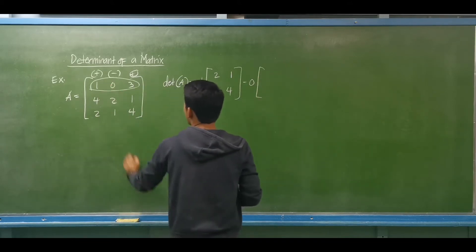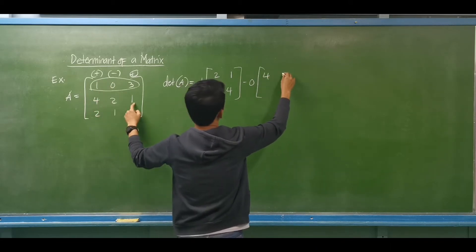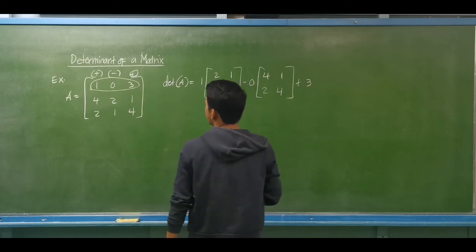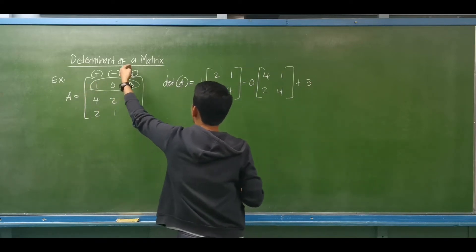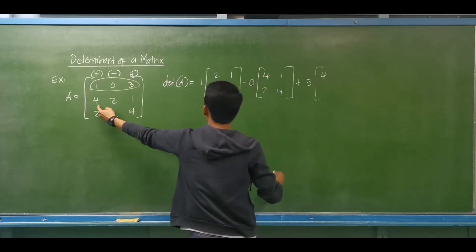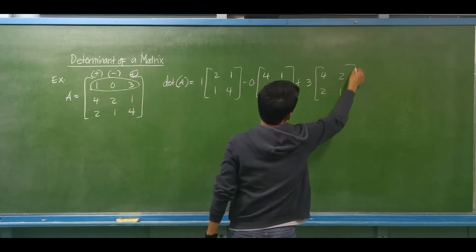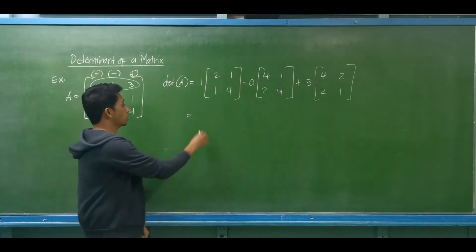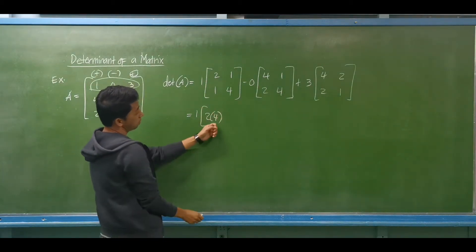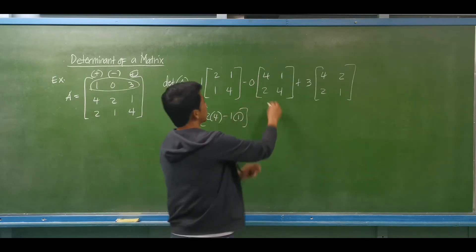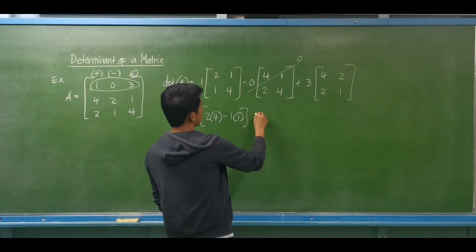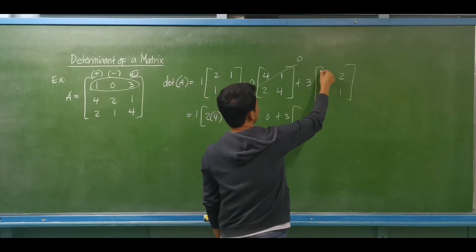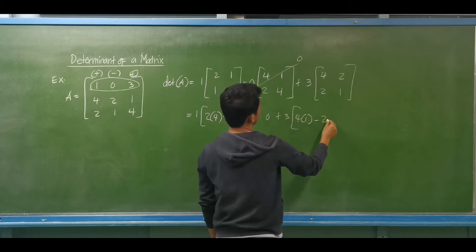The next element is minus 0. The minor of 0 — we have 4, 1, then 2, 4. Then lastly, plus 3. The minor of 3, deleting first row and third column, gives remaining elements: 4, 2, then 2, 1. Now we compute the determinants of these 2 by 2 matrices. This is 1 multiplied by (2×4 minus 1×1), then minus 0, plus 3 multiplied by (4×1 minus 2×2).